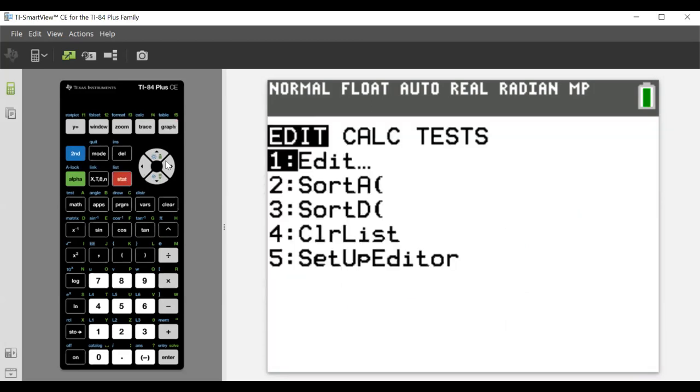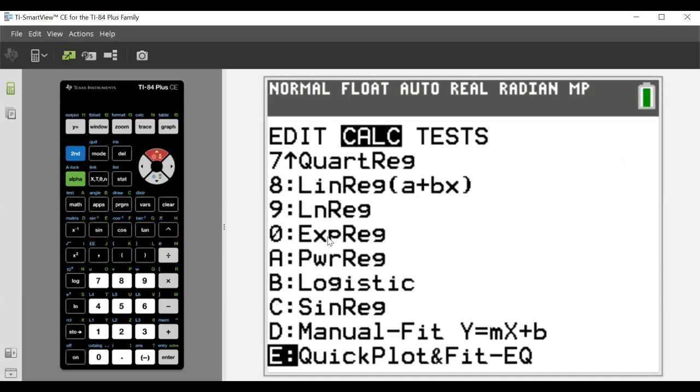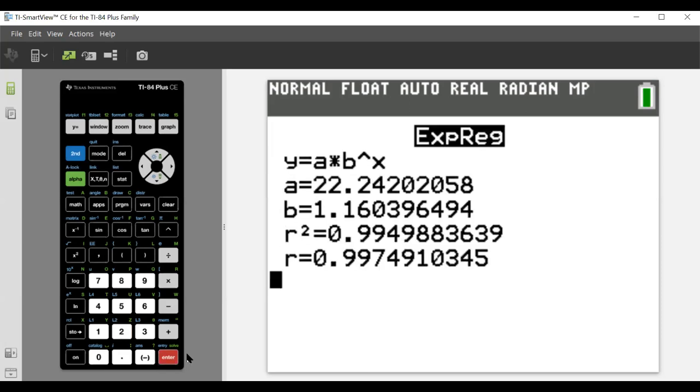Okay, so now we can see we have this curvature, which would indicate it's going to be an exponential in nature. So now we can go over and go to calc, and if we go to zero, up here, it should be exponential regression. So we just type zero, and then now we have to change our input and output again. And so we get the 22,242, and 1.160. So if we go back here really quickly, that's what we have here.